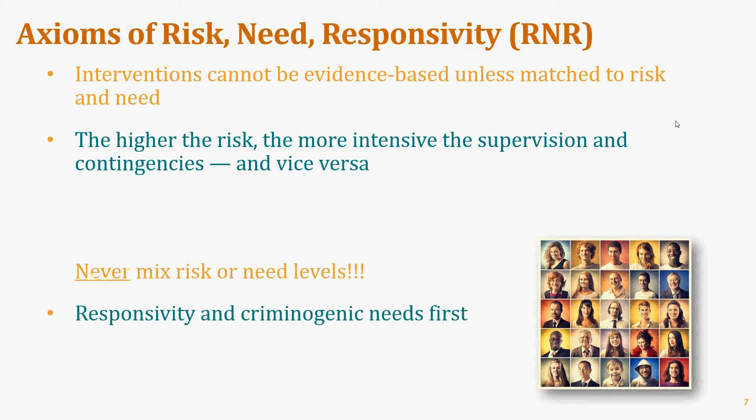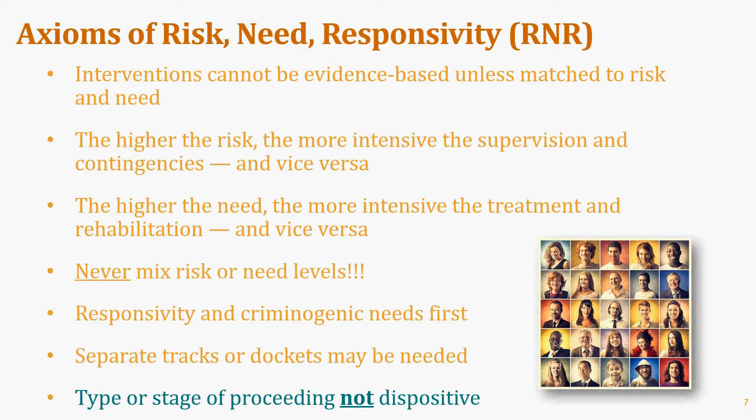Unfortunately, although mixing risk levels is contraindicated malpractice, it is also very common practice. Responsivity and criminogenic needs must be treated first — if you focus on the results of crime before the causes, you make people worse. You may need separate tracks or dockets to keep high-risk and high-need people separate. Many people mistakenly assume that a misdemeanor, first-time, or civil case means the person must be low-need — that is not true. You need to assess the individual using standardized tools.